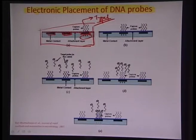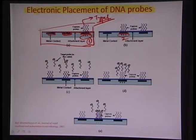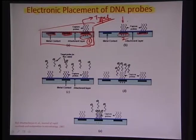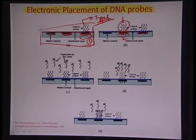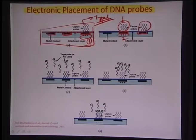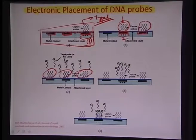If you want to place another probe type on electrode 2, you remove the voltage from electrode 1 and apply positive voltage to electrode 2. The capture probes then move toward the middle electrode, where a polyalyzing film sticks and immobilizes them. Repeating this process for all electrodes builds a library, and since we know which solution was used for each addressing step, we know exactly what sequence is on each electrode.